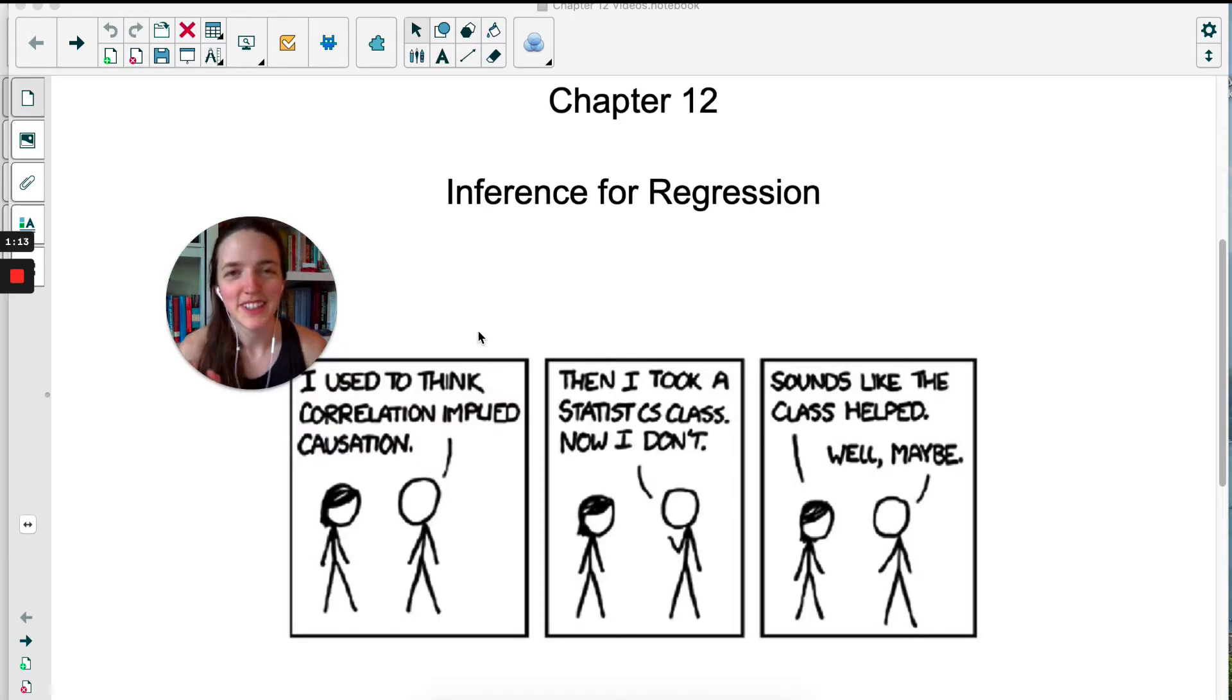Okay, this is it. Last chapter of AP Statistics. Technically there's a chapter 13, but it's optional. In this chapter, we're going to go back to scatter plots, which was all the way back in chapter 2. But instead of just looking at scatter plots and the least squares regression lines, we're going to actually be doing inference on those least squares regression lines.